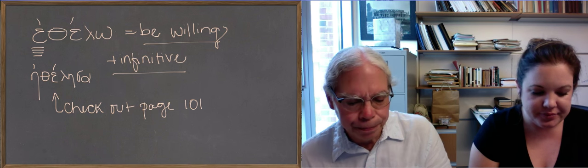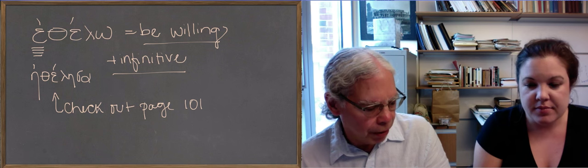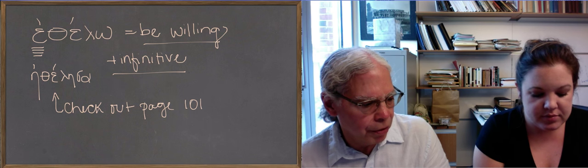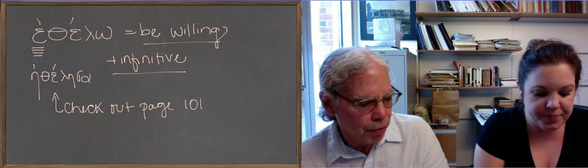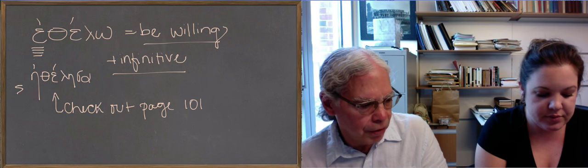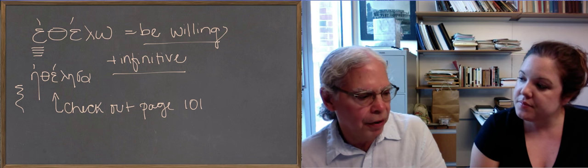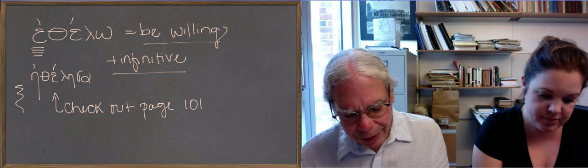So the only tricky thing is that when you have a vocalic augment in the case of imperfect or aorists, or pluperfect verbs that begin with a vowel, it becomes a lengthened form of that vowel. And in the case of alpha and epsilon, it's an eta. Thanks for reminding me, Boise.